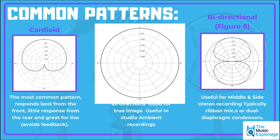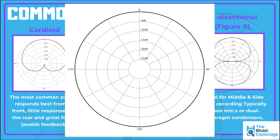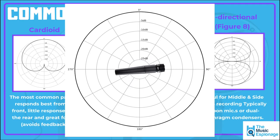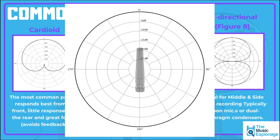Conversely, with the omnidirectional polar pattern — which you might find on some condenser microphones with a variable polar pattern — you can see there's no preference to where the microphone points. Whether it's on axis at zero degrees or pointing 180 degrees away from the sound source, it's still going to pick it up just as loud. This is really good for ambient recordings, such as capturing a few musicians in a space all at once.